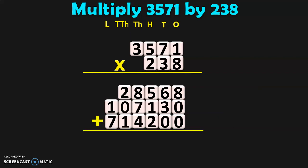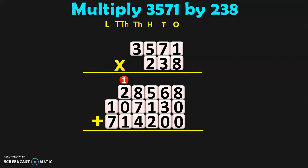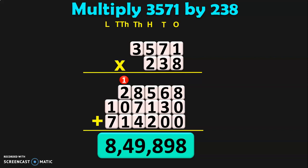Now we have to add the 3 products and get the answer. 8 plus 0 plus 0 is 8. 6 plus 3 is 9. 5 plus 1 is 6. 6 plus 2 is 8. 8 plus 7 is 15, plus 4 is 19 — 9, carry over 1. 1 plus 2 is 3, 3 plus 0 is 3, and 3 plus 1 is 4. And 1 plus 7 in the lakhs place is 8. So the answer is 8,49,898. You have to obtain the 3 products for the 3 individual digits, put their zeros and place values appropriately, then add the 3 products to get the answer.